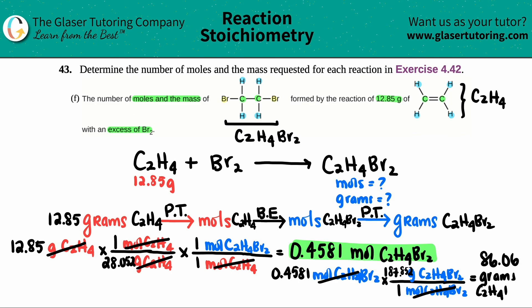86.06 grams of C₂H₄Br₂ is your final answer. Hopefully stoichiometry is easier now — let me know in the comments. Good luck on your future tests and quizzes. If you or your friends need help in physics or math too, check out the front of our channel — we've got tons of playlists. Keep studying hard, have a great day, be well — see you soon!